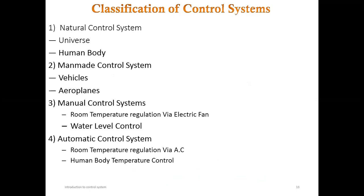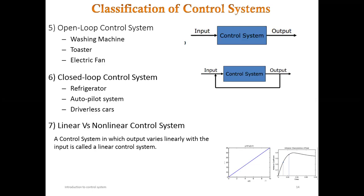Classification of control systems: (1) Natural control systems — the universe and the human body; (2) Man-made control systems — vehicles and aeroplanes; (3) Manual control systems — room temperature regulation via electric fan, water level controller; (4) Automatic control systems — room temperature regulation via AC and human body temperature control; (5) Open loop control systems — washing machine, toaster, electric fan; (6) Closed loop control systems — refrigerator, autopilot system, driverless car.